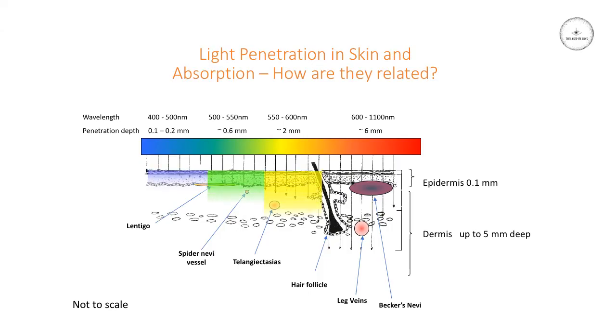We know that different wavelengths penetrate to different depths in the skin. Red light penetrates the deepest, while yellow penetrates further than green, which penetrates further than blue. This means we must choose our wavelength according to how deep the target is.